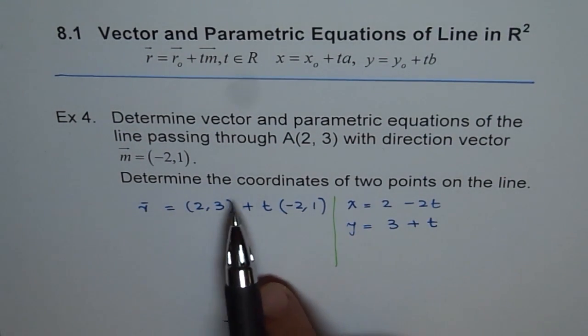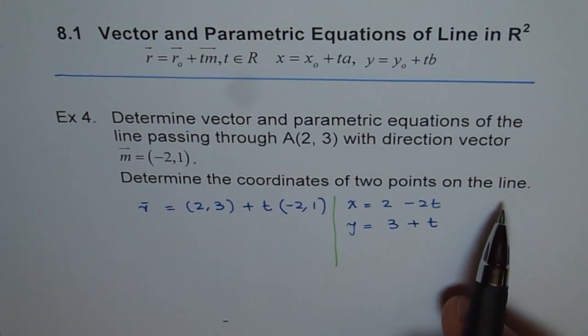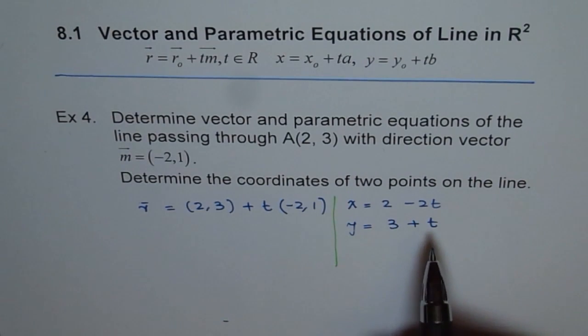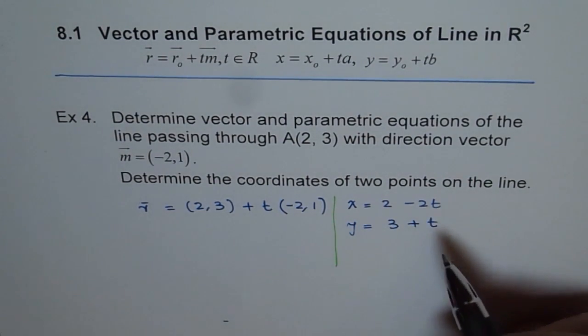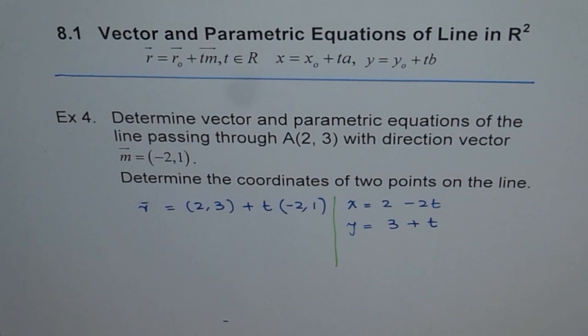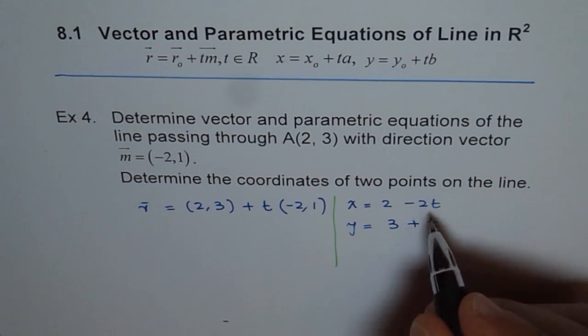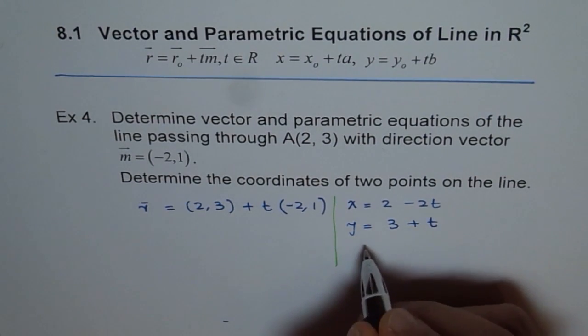Now, to determine coordinates of two points on the line, we can give some value to T and find the coordinates. For example, we can give T equals 1. So if T equals 1, then what do we get?